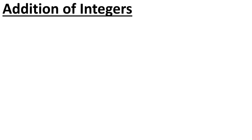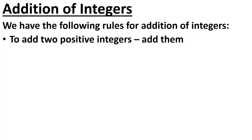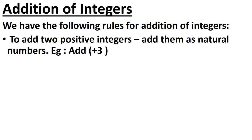After that, we have done addition of integers. We have the following rules: to add 2 positive integers, add them as natural numbers. For example, plus 3 and plus 5 — both are positive integers, so we add them: 3 plus 5 equals 8. Then place the sign of the integers, which is plus. So the answer is plus 8.